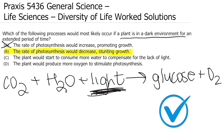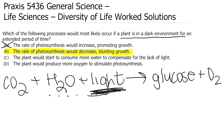B is the right answer, but let's keep reading. C says the plant would start to consume more water to compensate for the lack of light. Water is definitely one of the requirements for photosynthesis, but during the light reactions, light is used to split water in order to form oxygen and get electrons moving onto our electron carriers. So consuming more water isn't going to compensate for the lack of light — we need the light because it is our source of energy. The plant is not going to do that because it doesn't actually compensate for the lack of light.